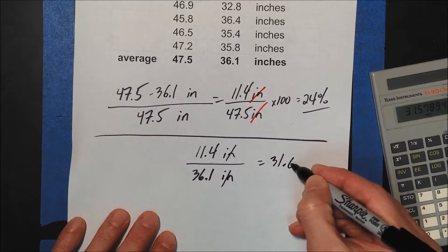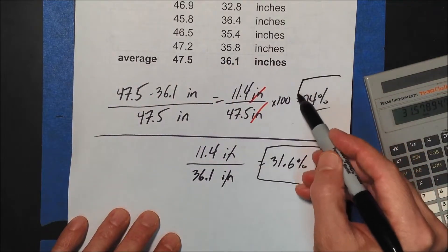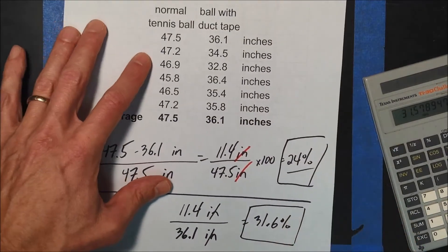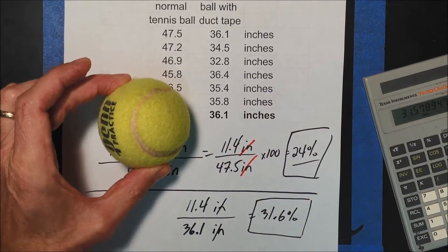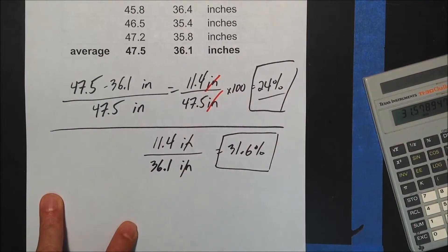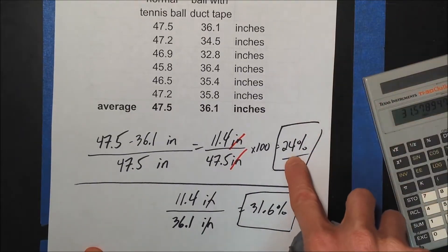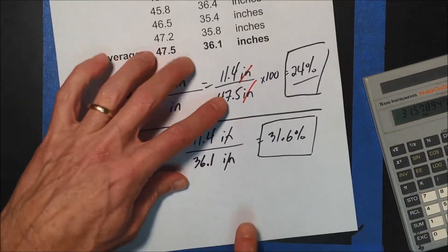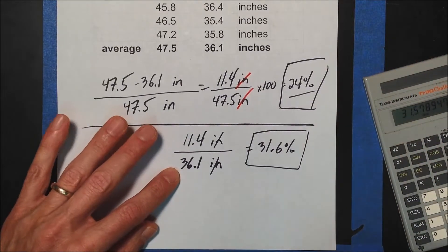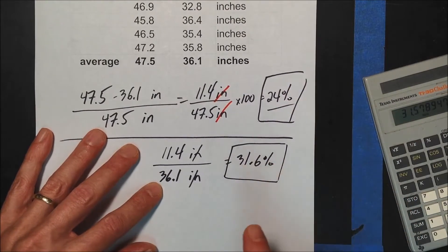So now it's 31.6%. This is interesting because you have the same numbers, the same experiment, but you're getting different results depending on the denominator. The phrasing here would be: the normal tennis ball bounces 31.6% higher than the one with the duct tape. It sounds similar, but it is different — the duct tape ball bounces 24% less than the normal tennis ball. Be careful: make sure your statement at the end is very clear, because you can make a dramatic mistake. As you can see, these numbers are quite different.